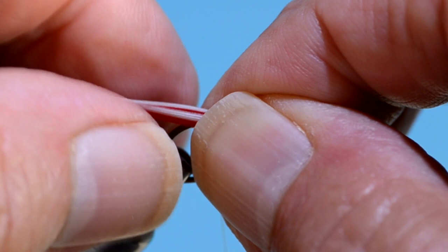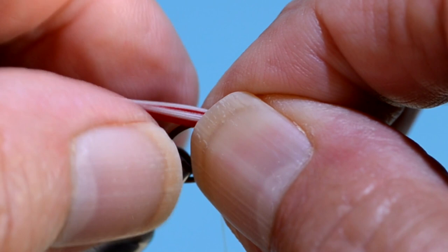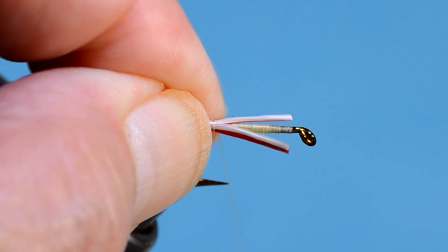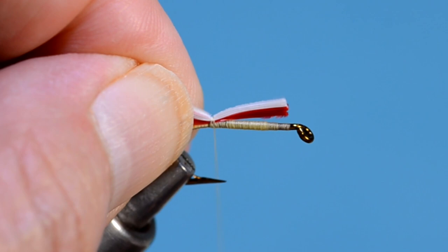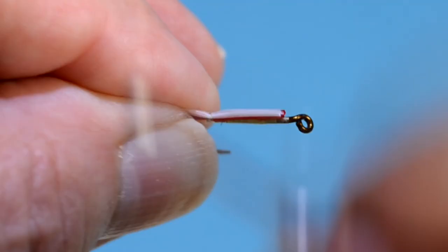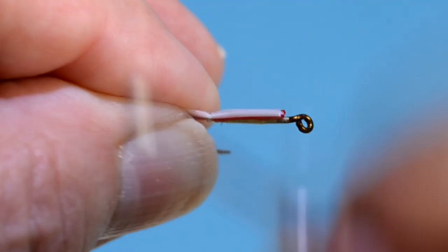Straddle the hook with left and right tailing slips, each about in the neighborhood of six strands wide, certainly no wider than six strands. Take two loose wraps of thread around them and then pull them both up, straight up to the top of the hook. We want them to straddle just the top third of the shank on the hook.